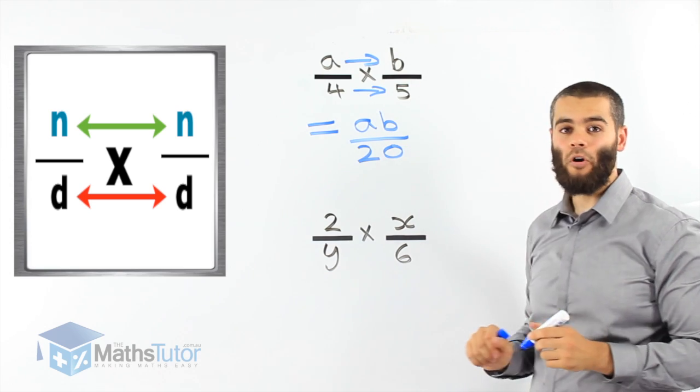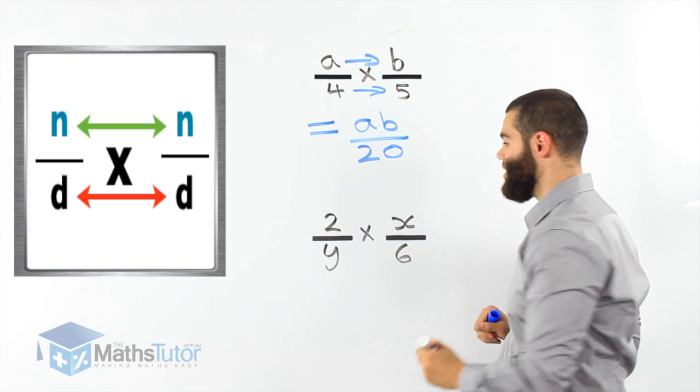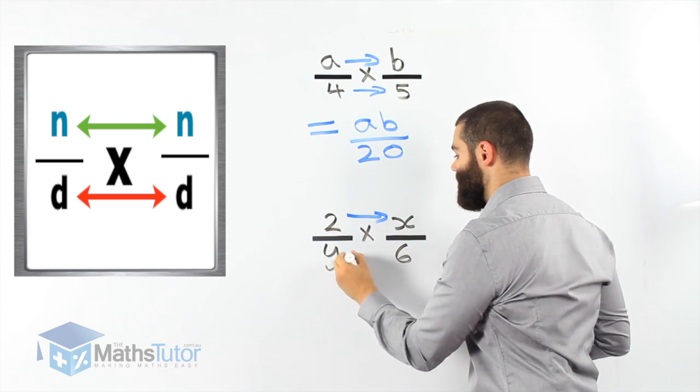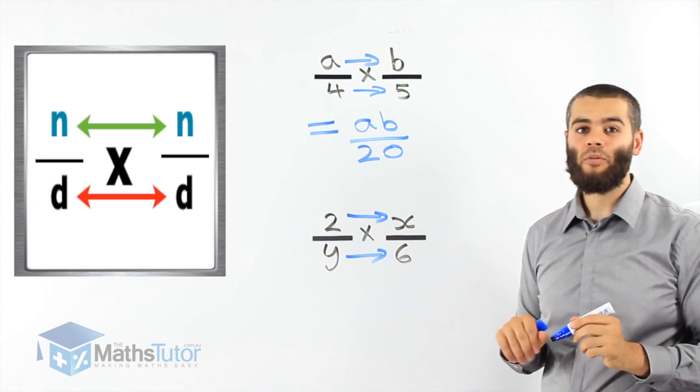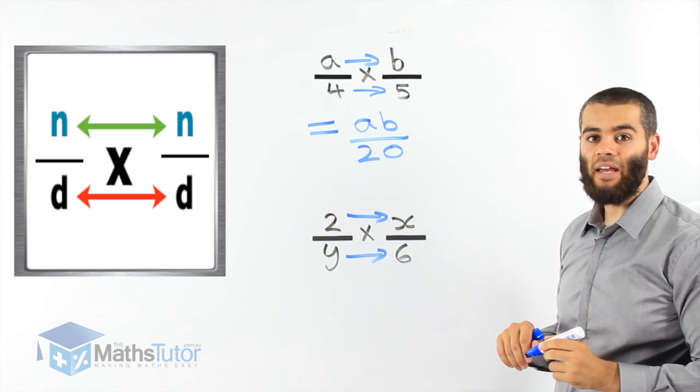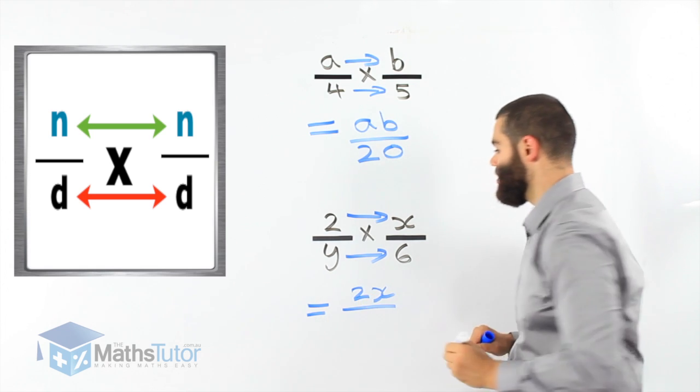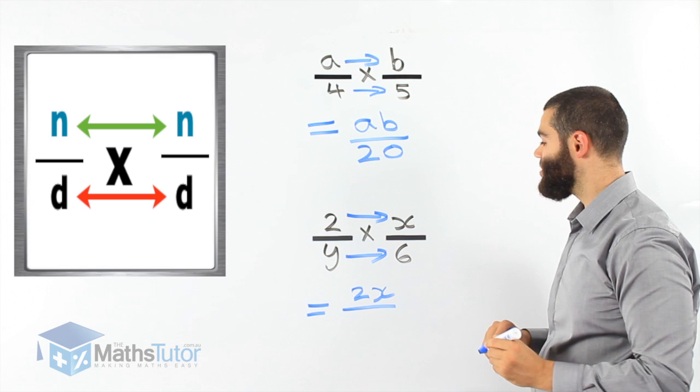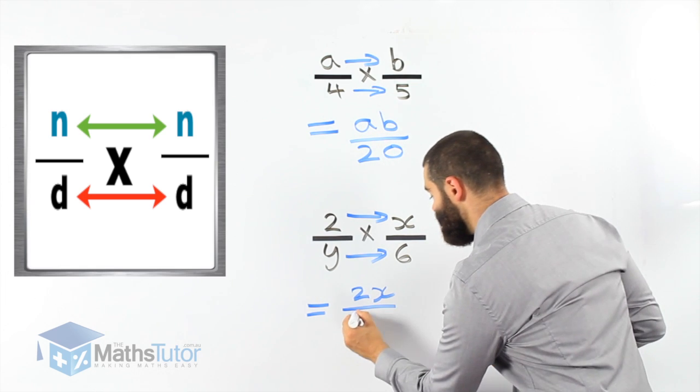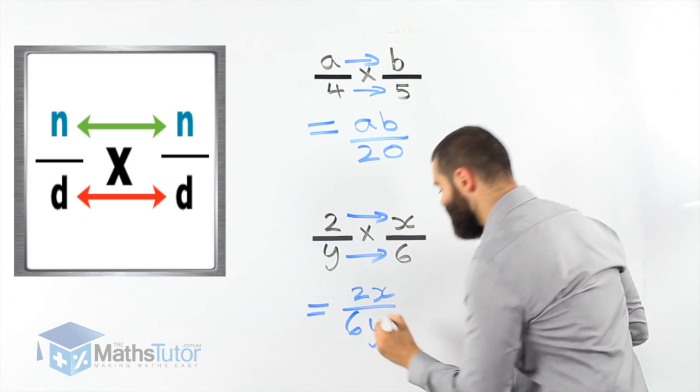Top times top, bottom times bottom. Again, here. Top times top, bottom times bottom. Two times x. We put our fraction bar. 2x. And y times 6. 6y. Can we simplify? In this case we can.